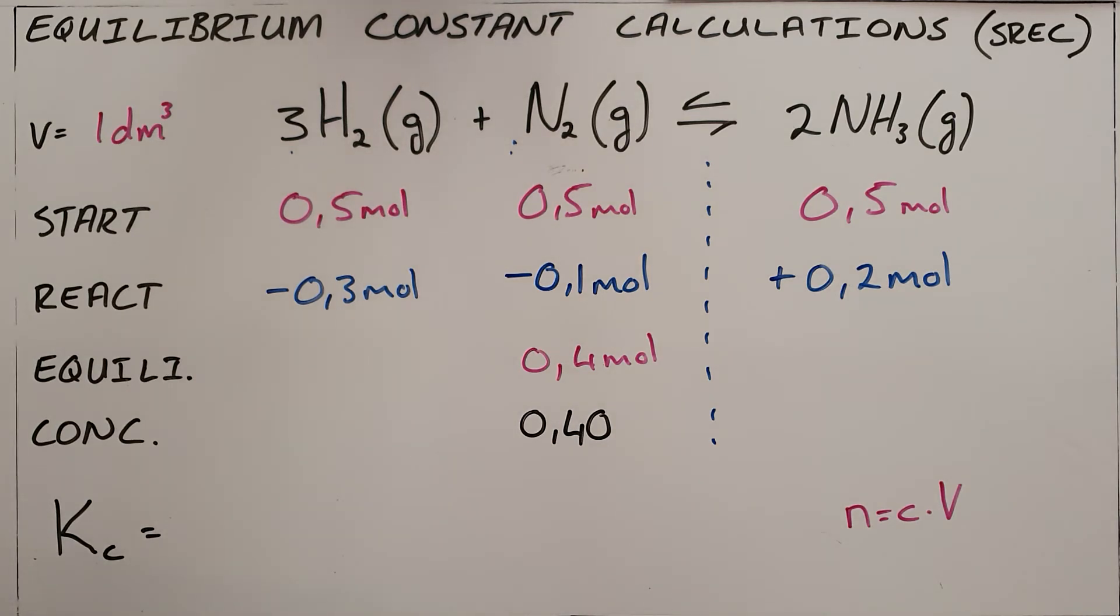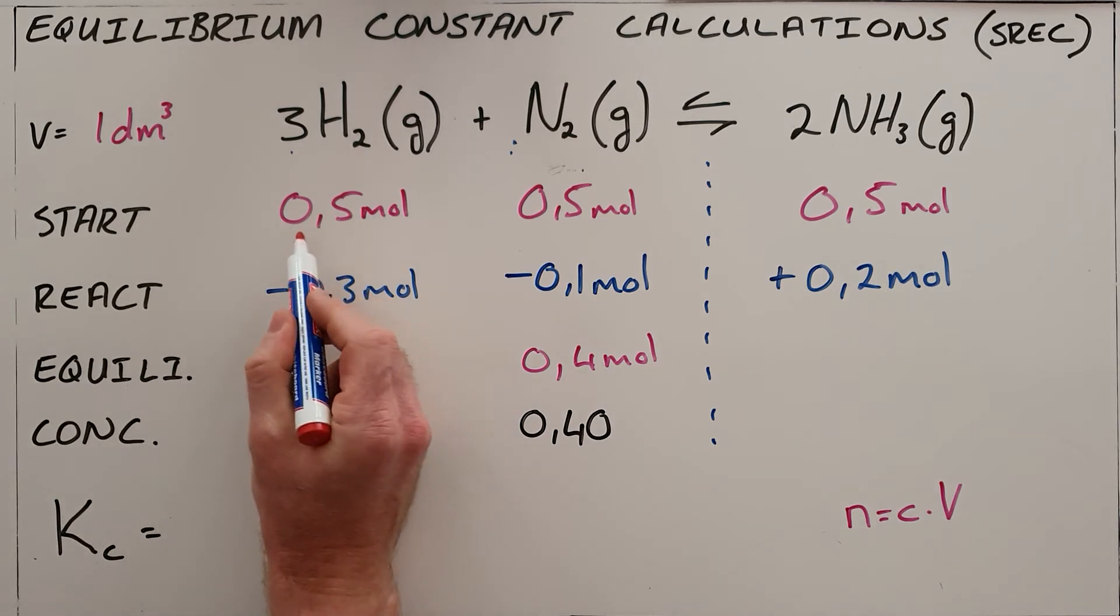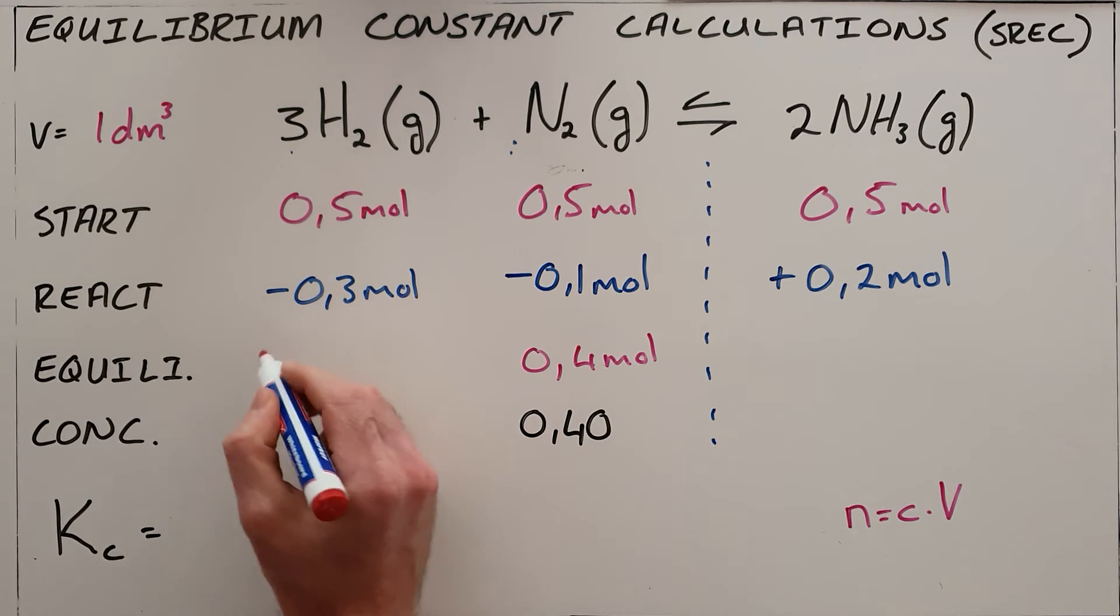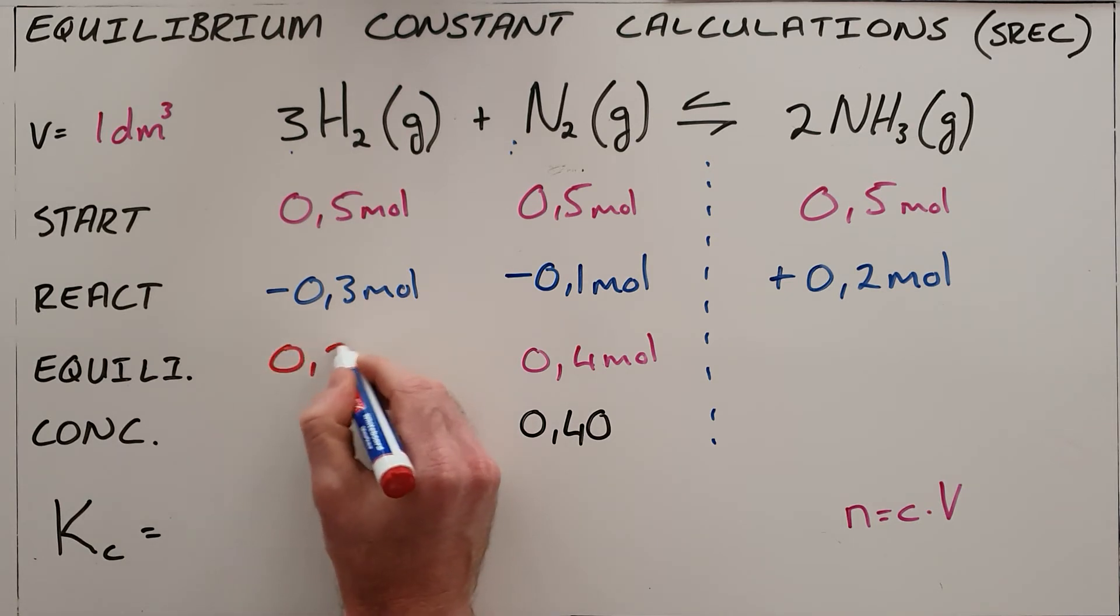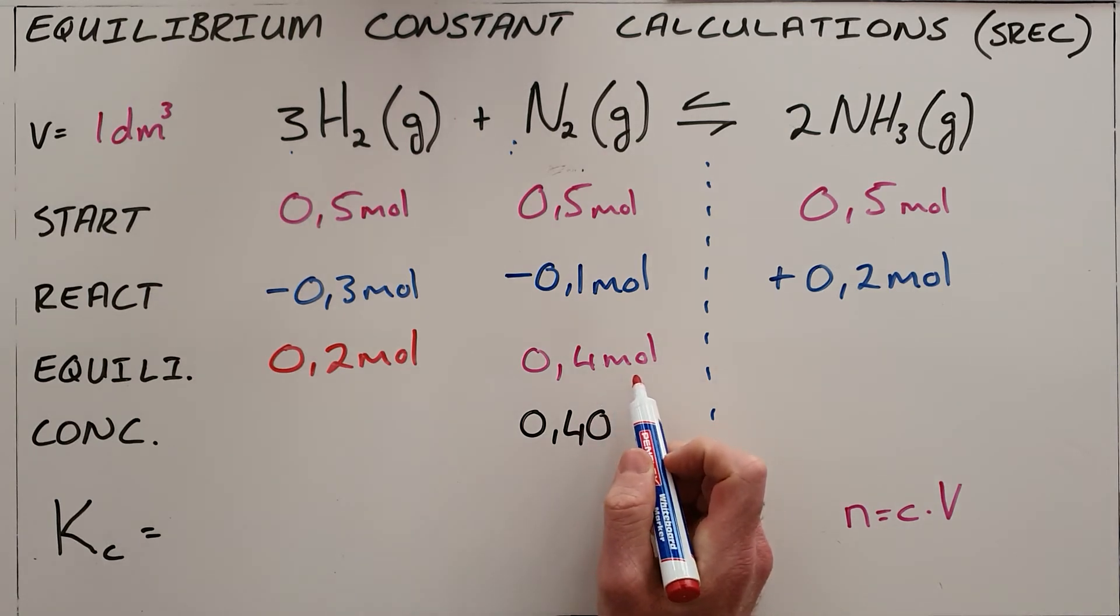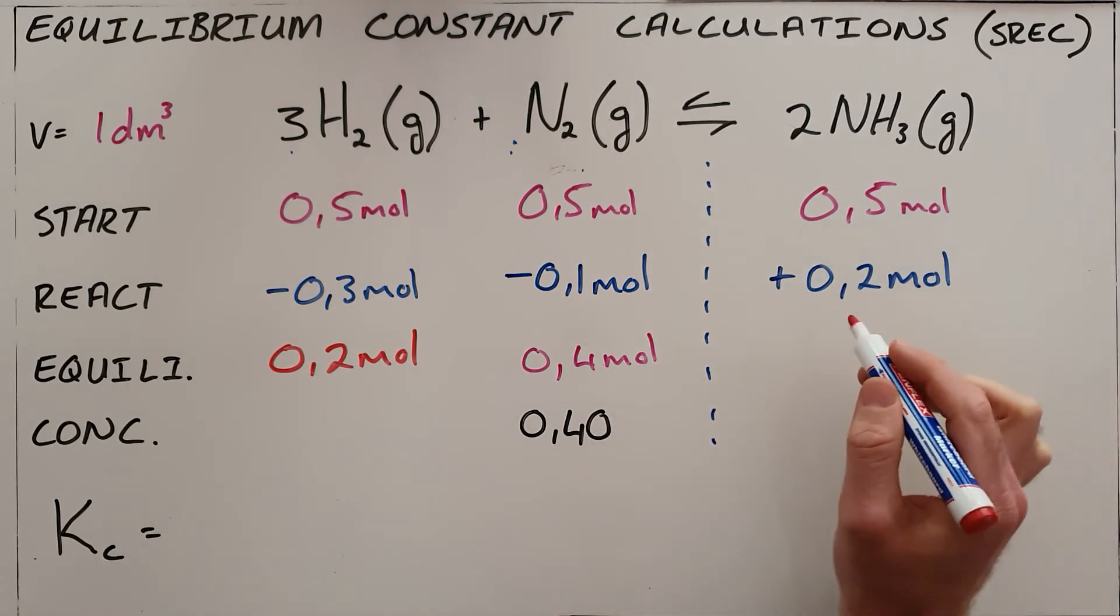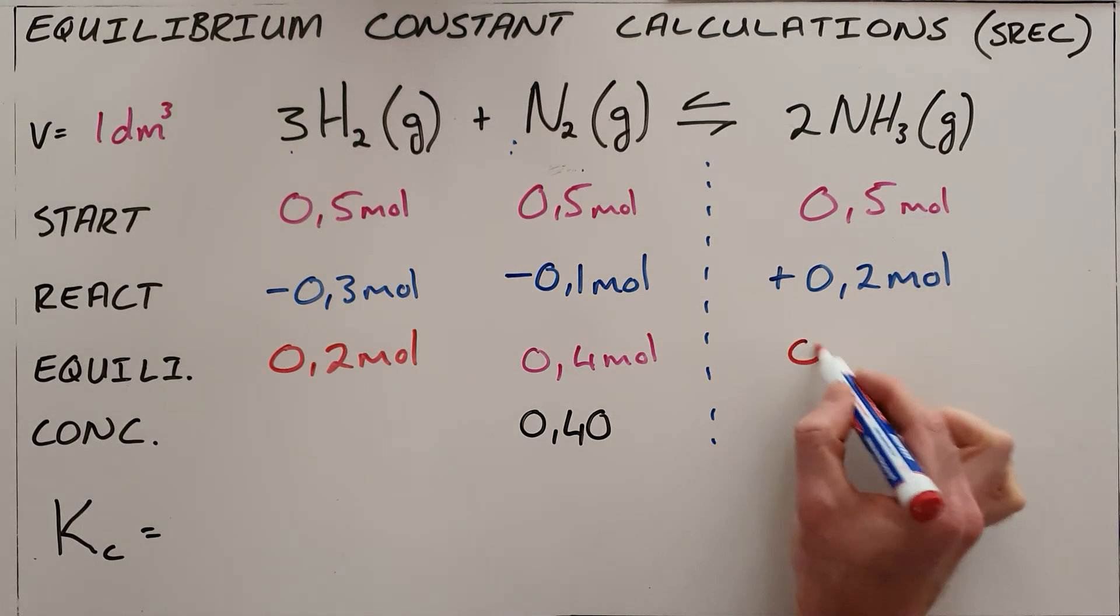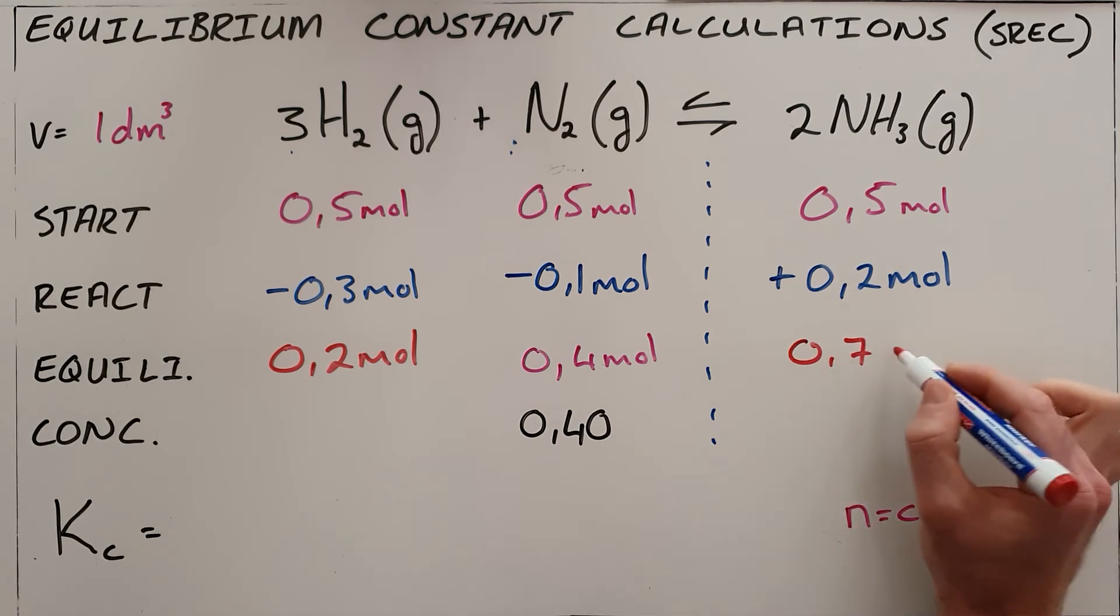We can now, since we know what quantities we start with and we know how much reacted, we can say since we started with 0.5 moles of hydrogen, reacted 0.3, we must have ended with 0.2 moles of hydrogen at equilibrium. We can calculate the amount of ammonia at equilibrium by saying starting with 0.5, forming 0.2, we must end with 0.7 moles.